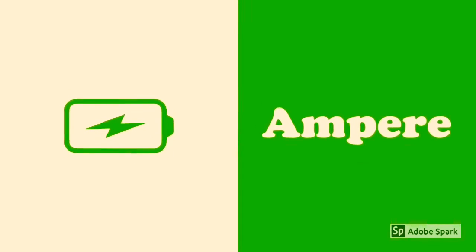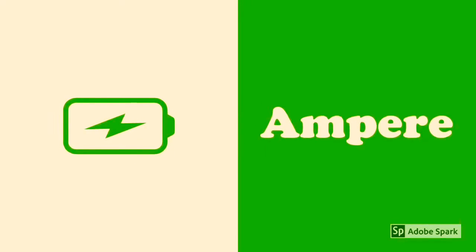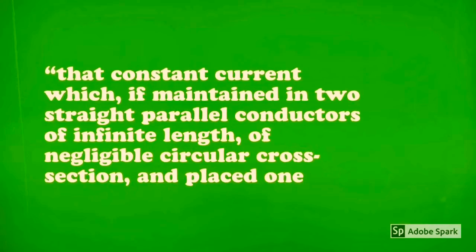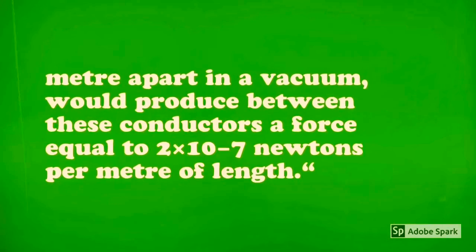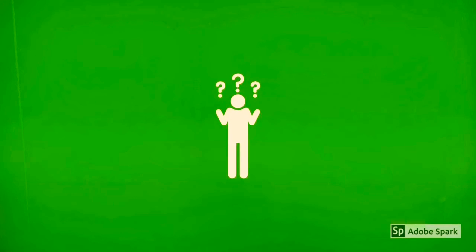The SI unit for electrical current is the ampere, or the amp, defined as that constant current which, if maintained in two straight parallel conductors of infinite length of negligible circular cross-section and placed one meter apart in a vacuum, would produce between these conductors a force equal to 2 times 10 to the negative 7 newtons per meter of length. And no, I don't know what that means.